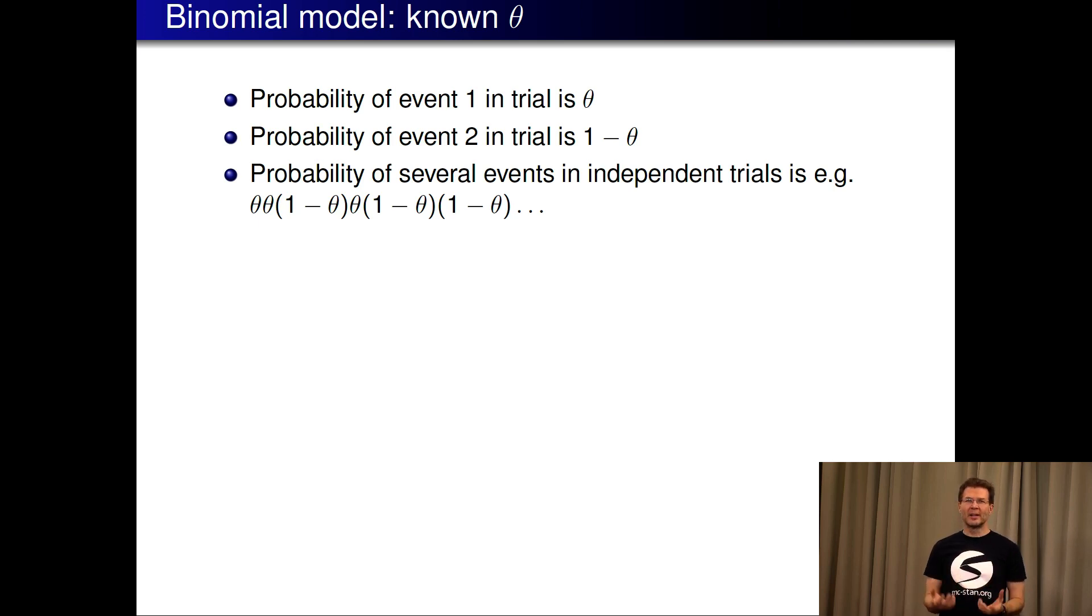If we are interested only in the total, how many red chips we picked up when we repeated this many times, we can summarize this by combining all the theta terms. So we have theta to exponent y, which is the number of red chips, and 1 minus theta to exponent n minus y, which is the number of yellow chips.